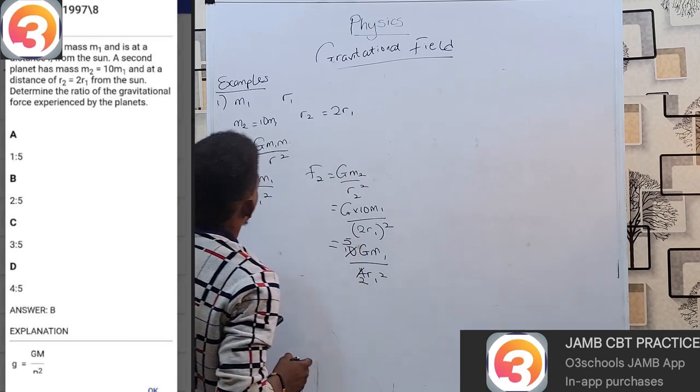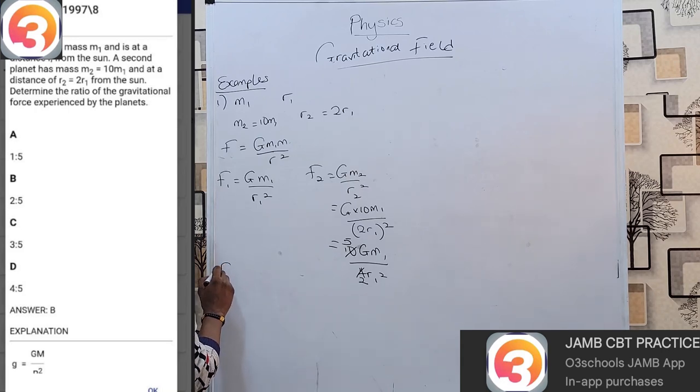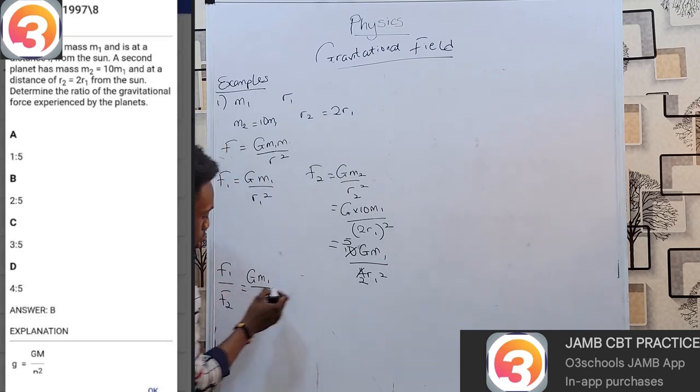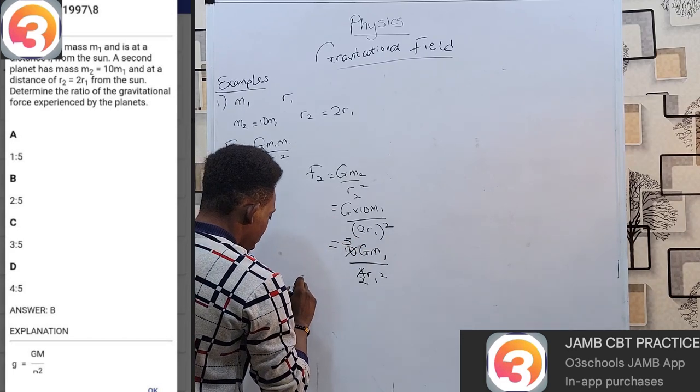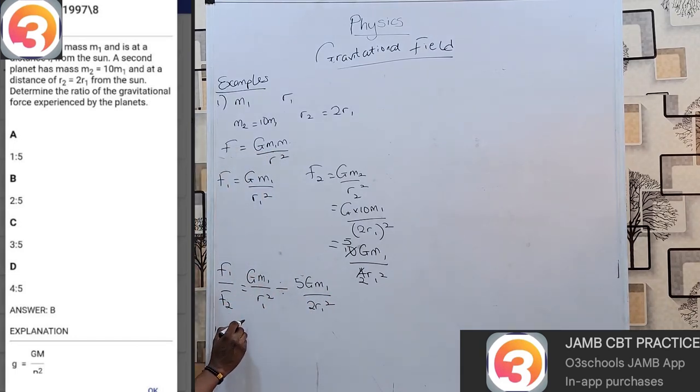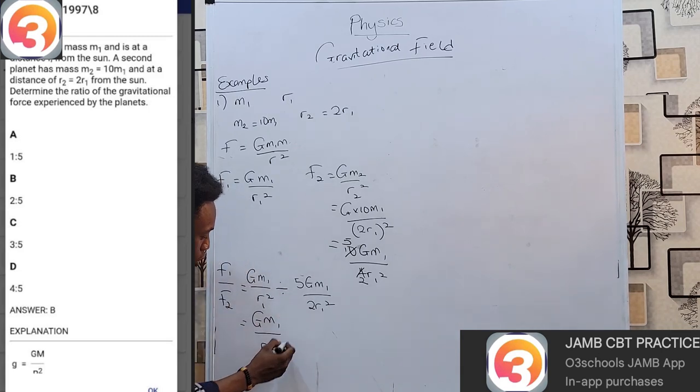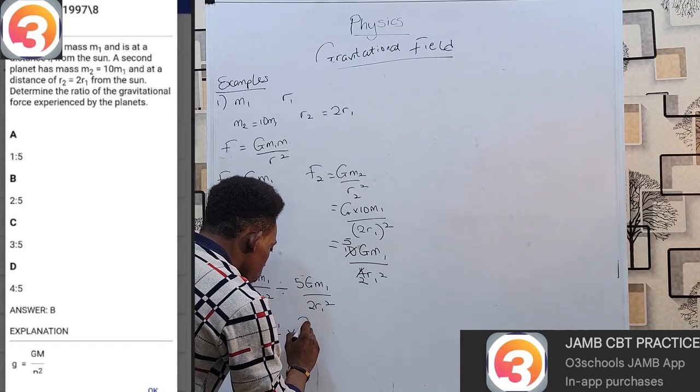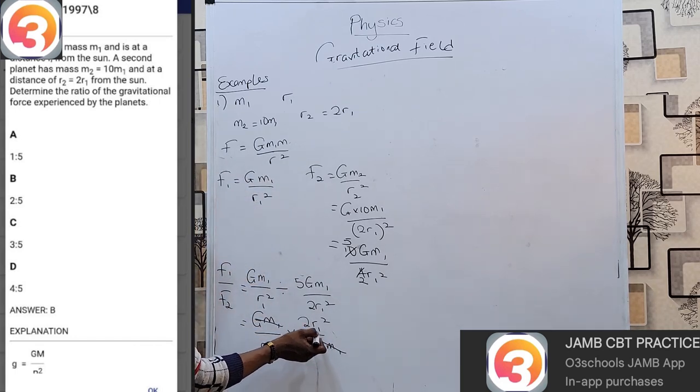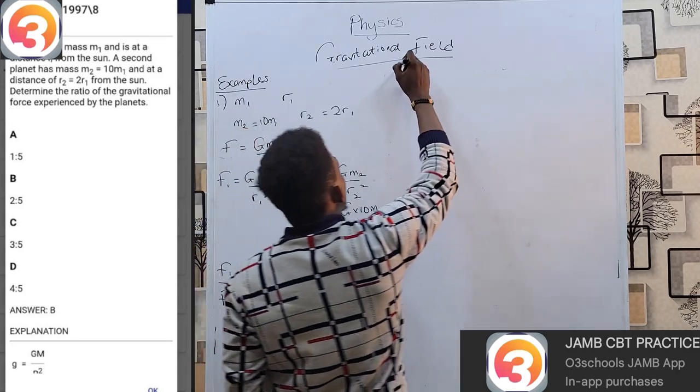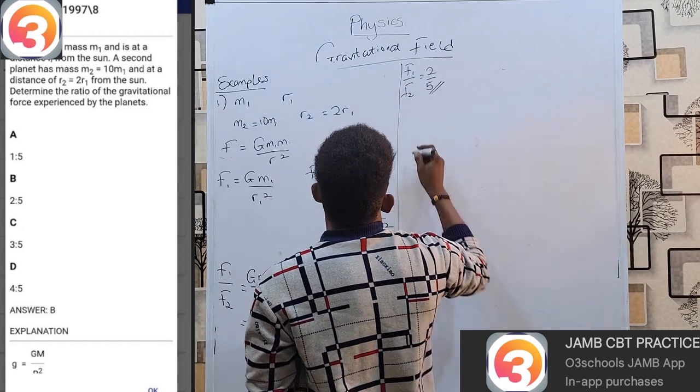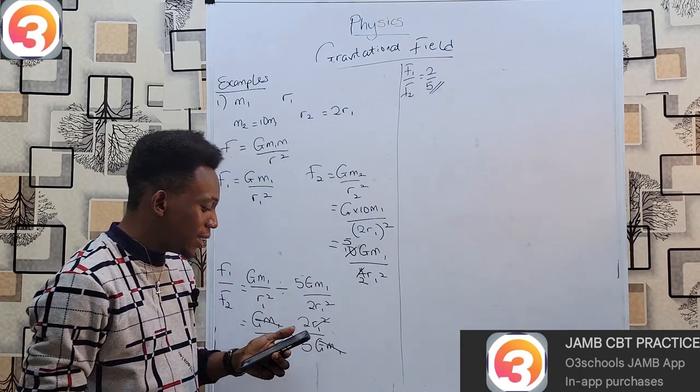We know that r2 is 2 r1, so that'll be (2 r1)². Multiplying, 2 squared is 4, so 10 G m m1 / 4 r1². 10 divided by 4 is 2.5, which is 5/2. Therefore F1/F2 = (G m m1 / r1²) / (5 G m m1 / 2 r1²). From mathematics, division turns to multiplication and this gets turned around: 2 r1² / 5 G m m1. G m m1 cancels, r1² cancels, and automatically we can see F1 by F2 equals 2 over 5, and that is option B. Quite easy.